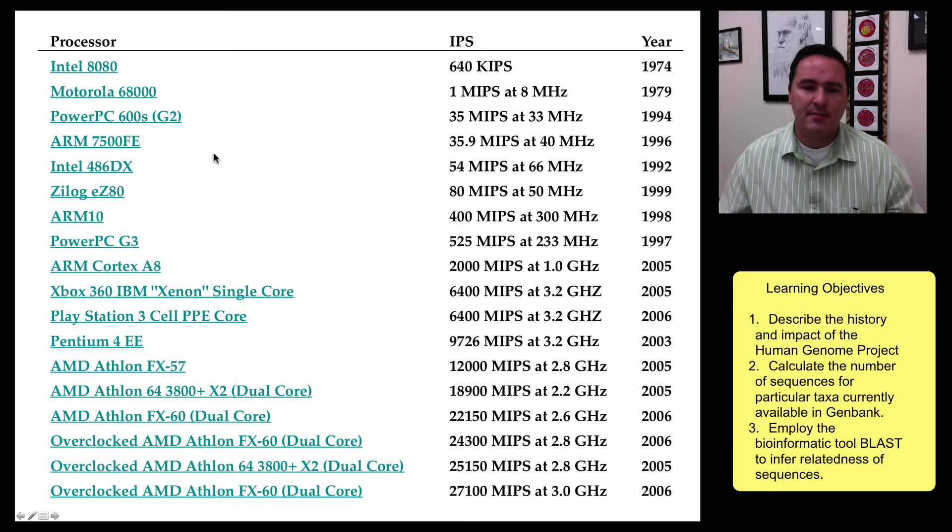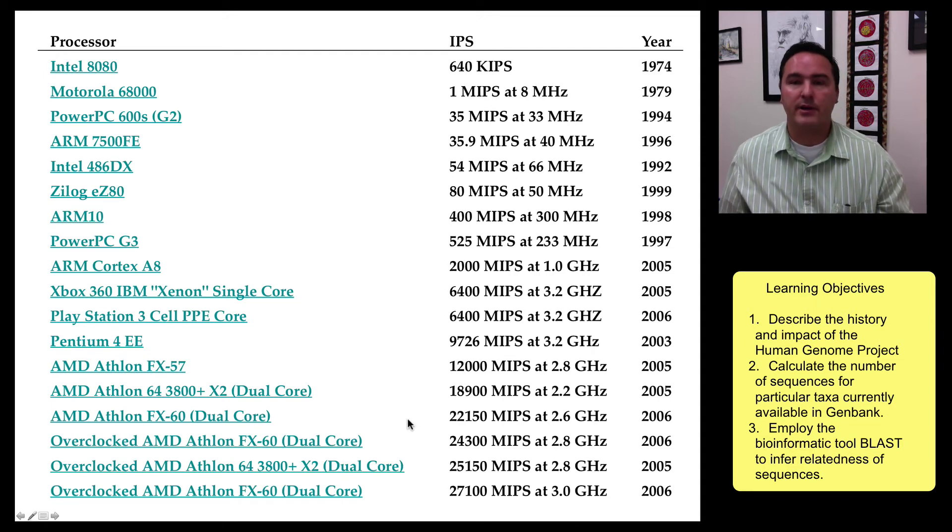Now, the good thing is that at the same time that all of this DNA data generation has been going on at leaps and bounds, we've also had a progress similar in computational power and storage power in computers, and so, if you just look over the years, you can see the speed at which computers can now function, and the amount of storage that we can have inside of computers has also greatly increased.